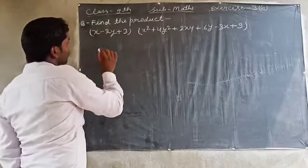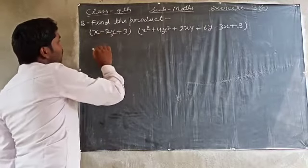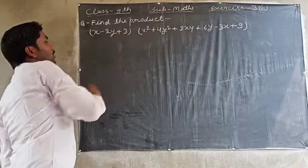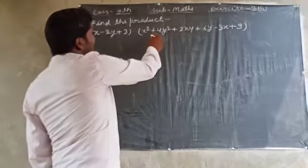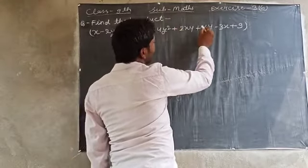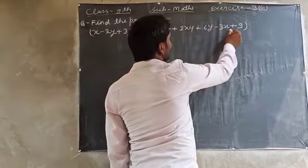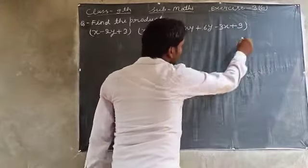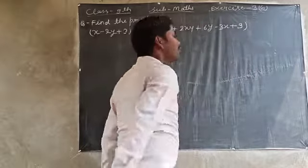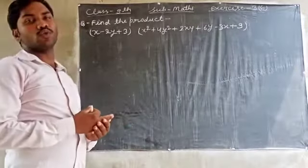I have taken one question: find the product of (x − 2y + 3) into (x² + 4y² + 2xy + 6y − 3x + 9). We will find the product of these two by using the formula.